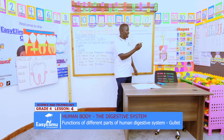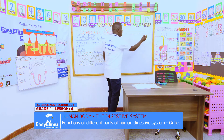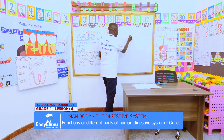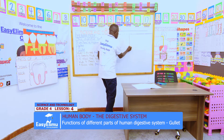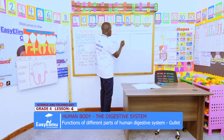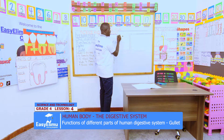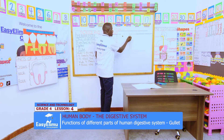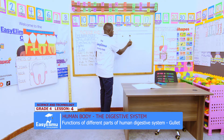I will demonstrate on this side. Let's pick the food pipe and bring it here. Once the food has been chewed and compacted together, it forms ball-like pieces — boluses. And these ball-like pieces have to go down to the stomach.